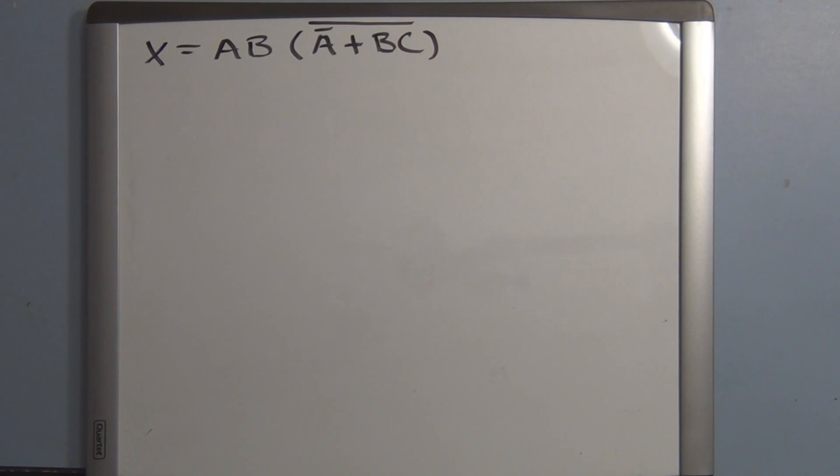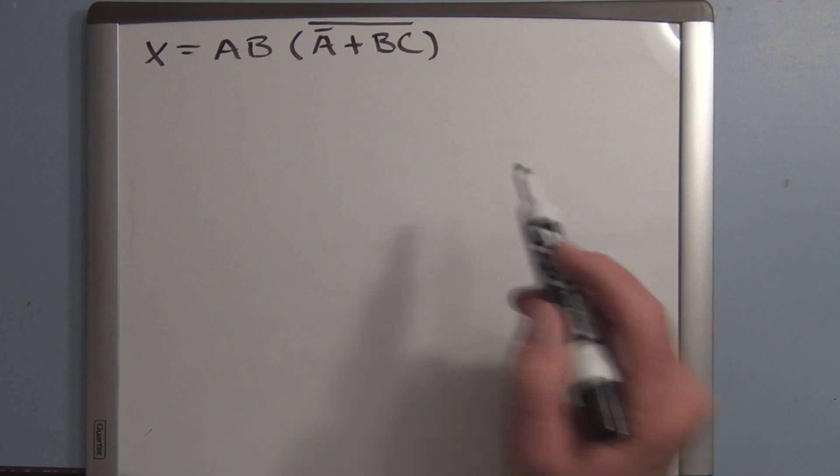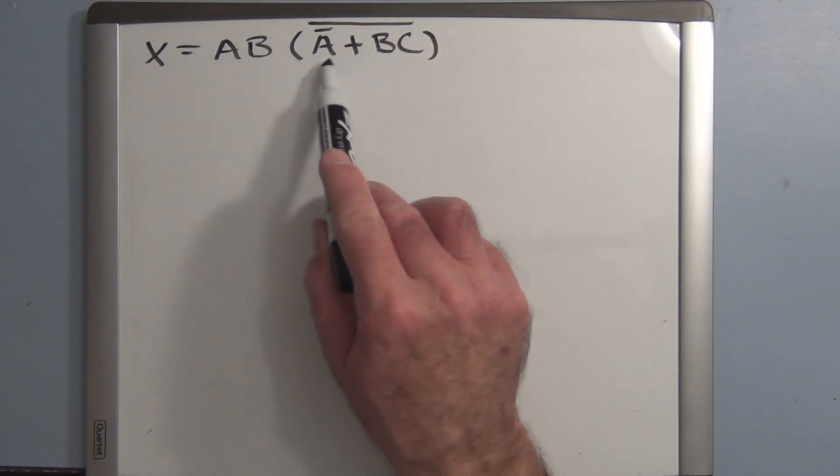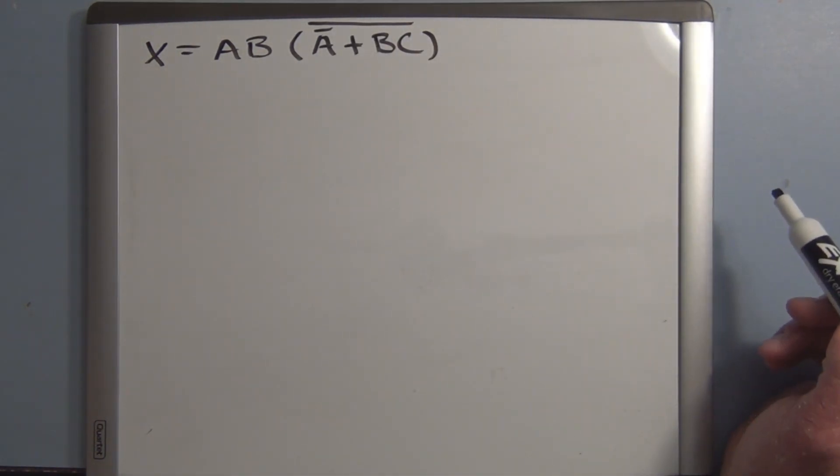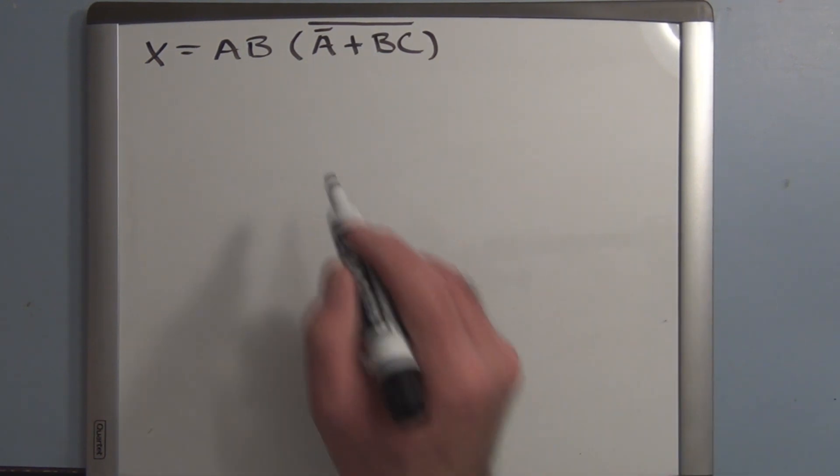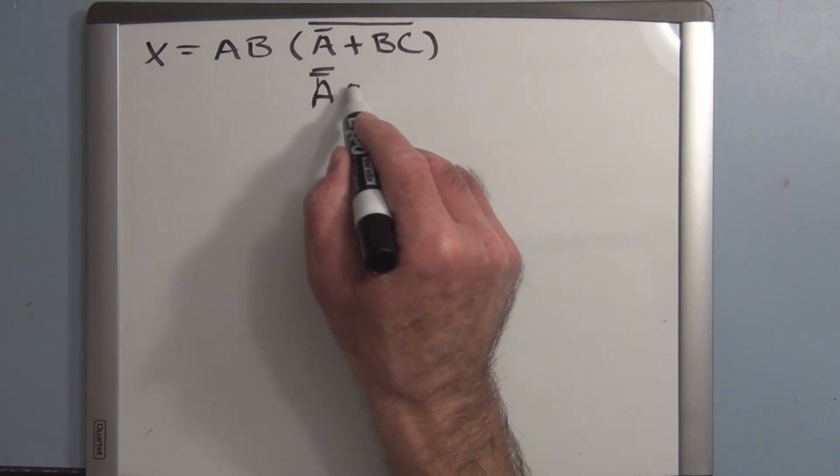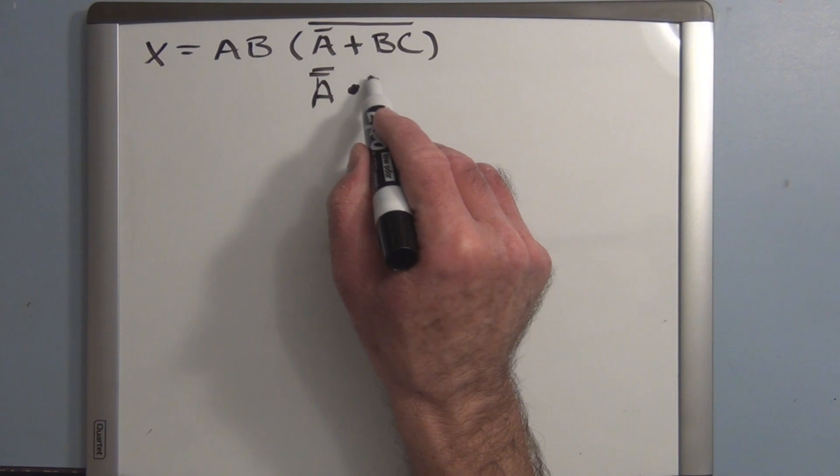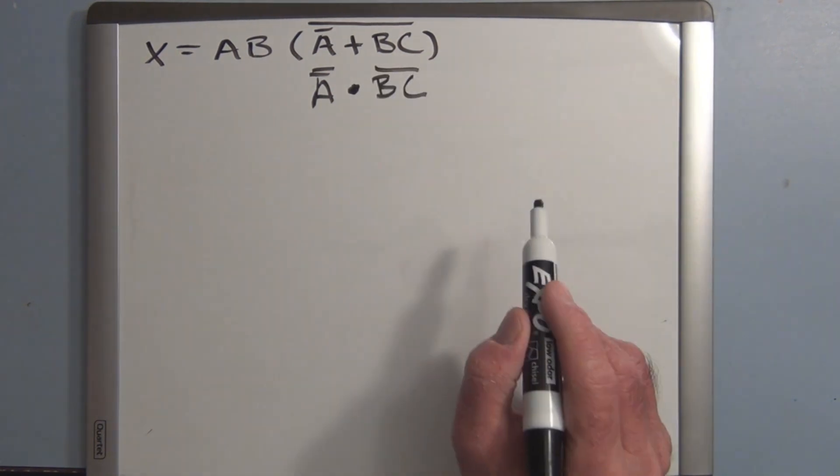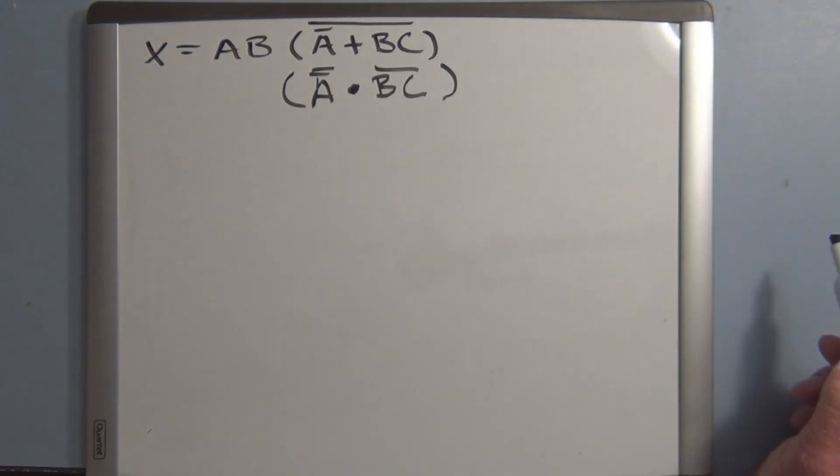So here's the equation. And we want to simplify this. And we have to remind ourselves that this is not ordinary algebra. This is Boolean algebra. So it's algebra associated with logic gates. So the first thing we're looking at is this large inverter over two elements here. And we want to break that up with De Morgan's theorem. So this becomes A double not. And this is changed to an AND. And we have BC not. And it's still within parentheses.